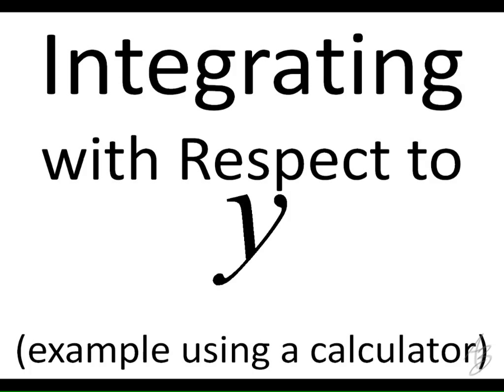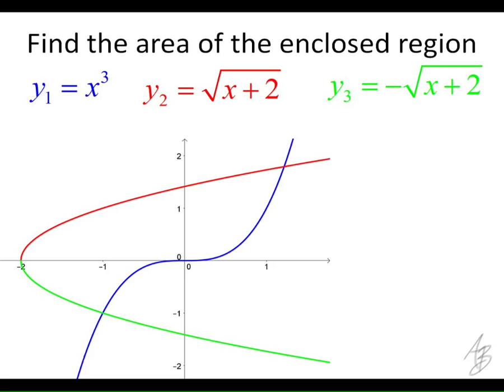This is an example where we're going to evaluate an integral, but we're going to change the variables from x's to y's. It's y equals the opposite of the square root of x plus 2. We want to find the area of the enclosed region here, which is going to be this area right here.